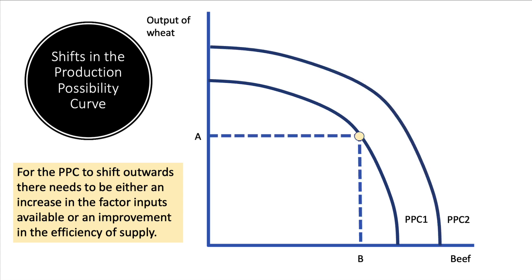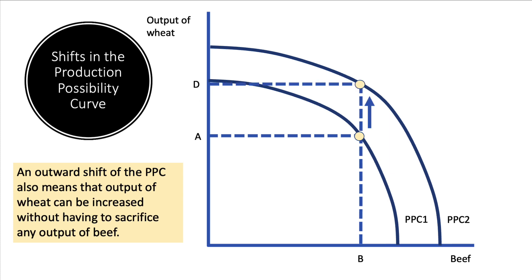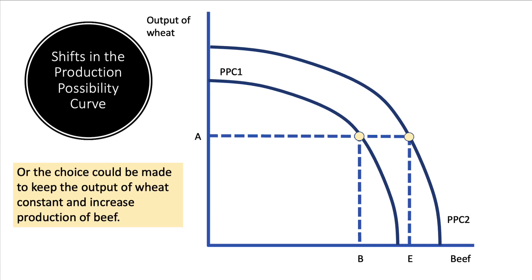Here's a shift in the PPC from PPC1 to PPC2, and that allows us to increase the output of both wheat and beef — an increase in both potential and actual output, which is economic growth. For example, a shift means you can now increase the output of wheat without having to sacrifice any output of beef: we can go from point A to D on wheat output while staying at point B for beef. Or we can hold wheat constant at A and move from B to E in terms of beef production.